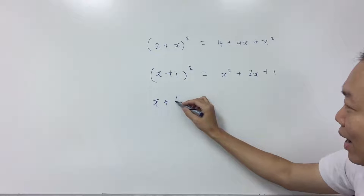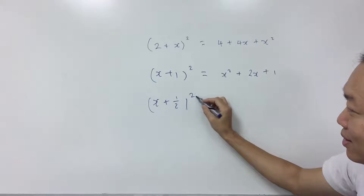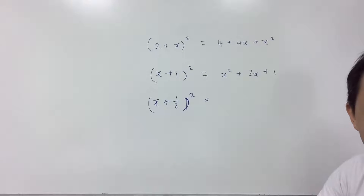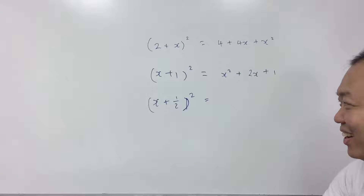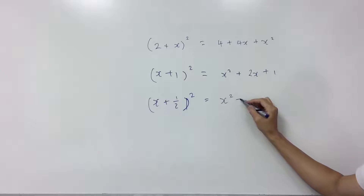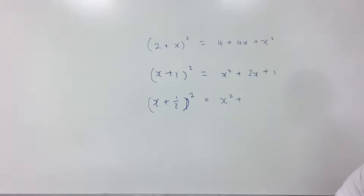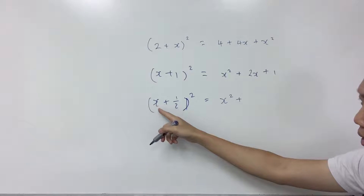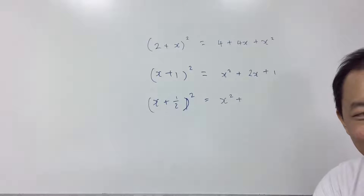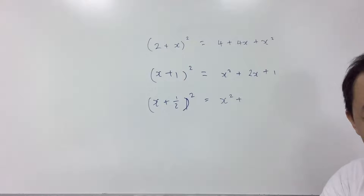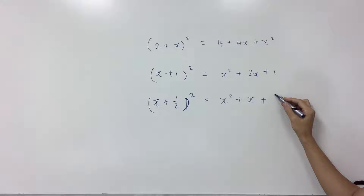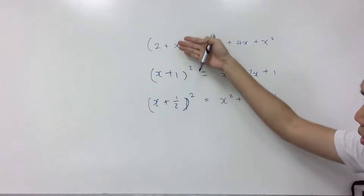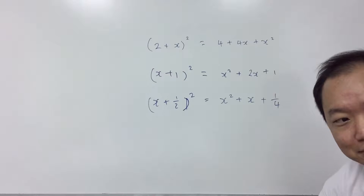Your turn. X plus half, bracket square. What is half squared? One quarter. Yeah, I knew that. X squared plus... two AB is two times X times half — two times X times half... that's plus X. Plus one quarter. So this is your rule number one — you've got to be able to expand it this way.